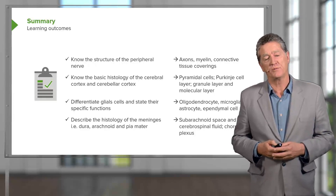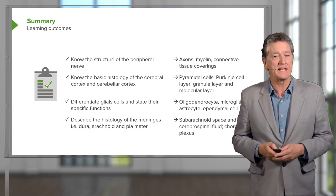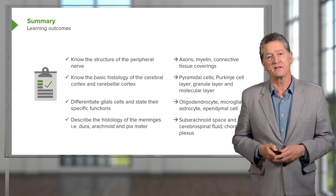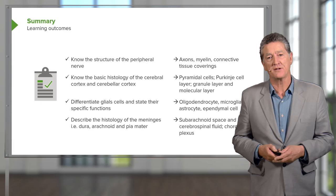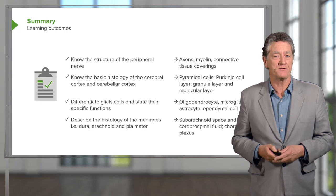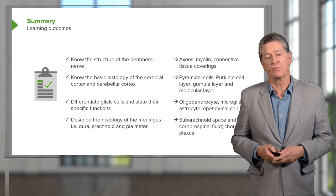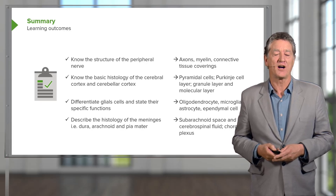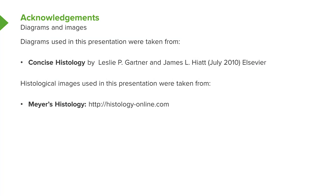Let's now summarise what we have just been looking at. Make sure you're aware of the structure of the peripheral nerve — its wrappings and its connective tissue coverings. Make sure you appreciate the complexity of both the cerebral cortex and the cerebellar cortex, the different cell layers. Make sure you know the different glial cells — recognise them and know their functions. And finally, appreciate the coverings of the brain that protect the brain and the spinal cord: the dura, the arachnoid, and the pia. Thank you very much for listening to this lecture. I hope you've enjoyed learning about the structure of the peripheral nerve and a brief overview of the histological structure of the brain.